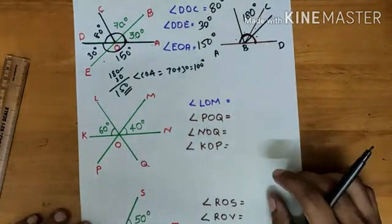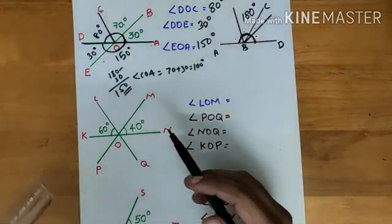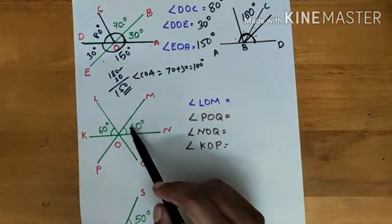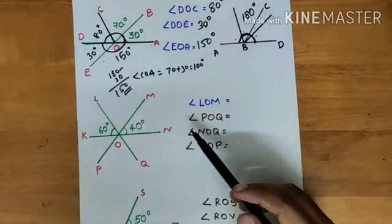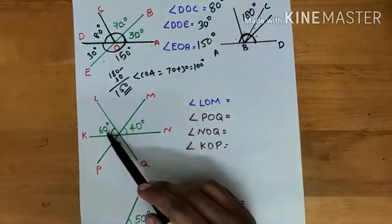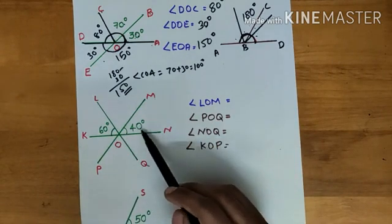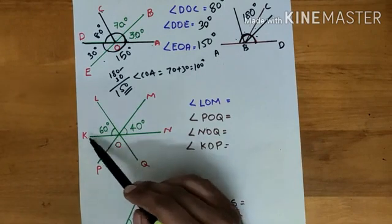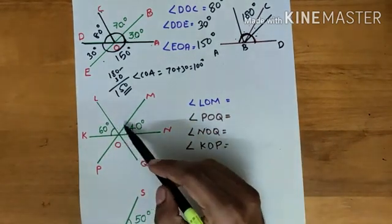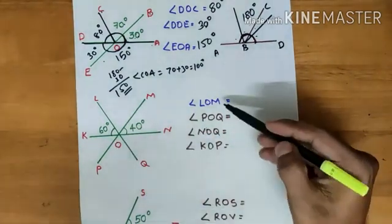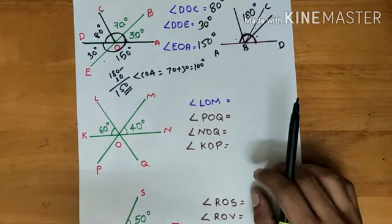Coming to our next problem. Here, six angles are present. Out of these six angles, two of them are given. The first one is 40 degrees — that is angle MON. The second one is 60 degrees — that is angle KOL. We want to find the remaining four angles: angle LOM, POQ, NOQ, and KOP.